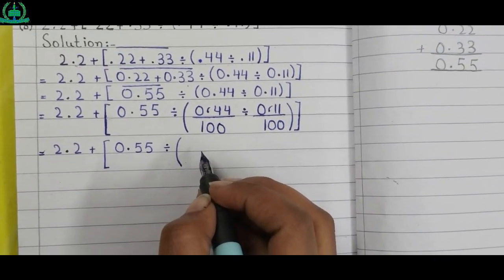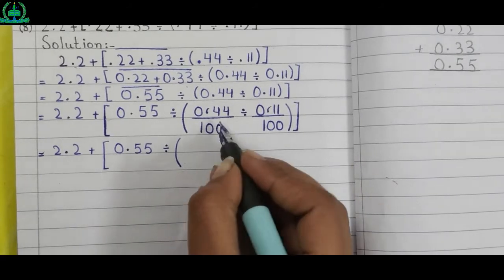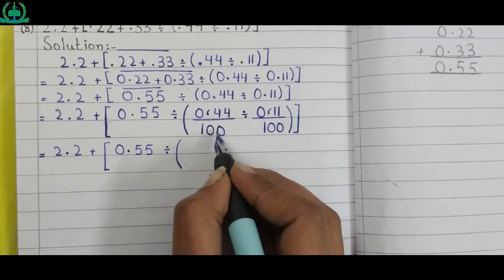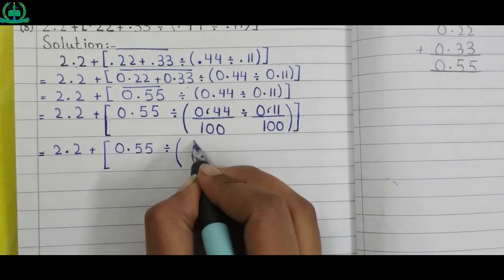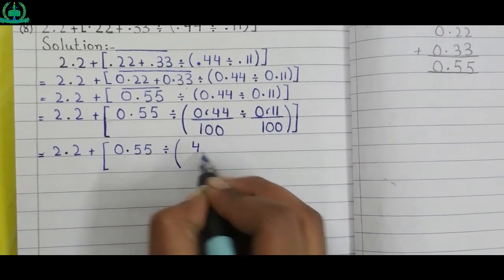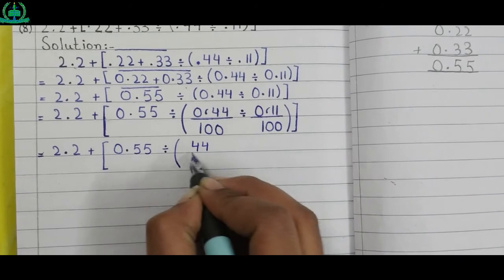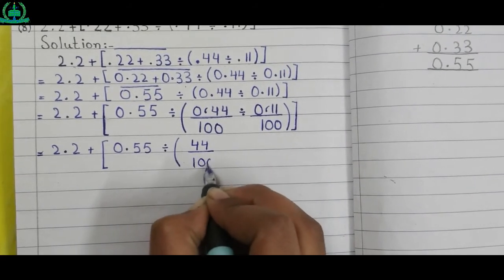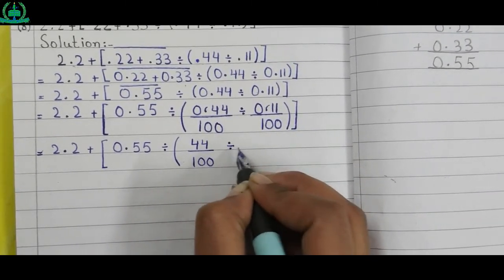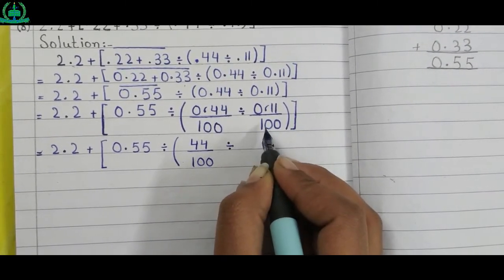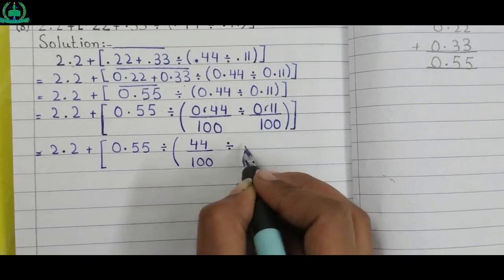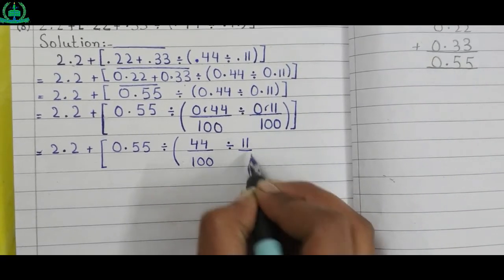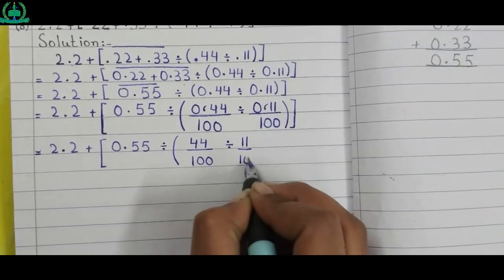Remaining part of the question as it is. It becomes 44 upon 100, so we write 44 upon 100. It becomes 11 upon 100, so we write 11 upon 100.